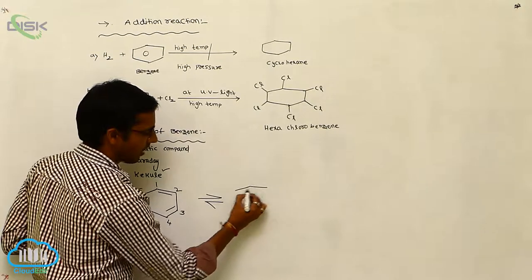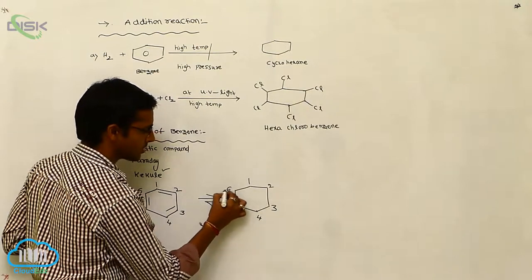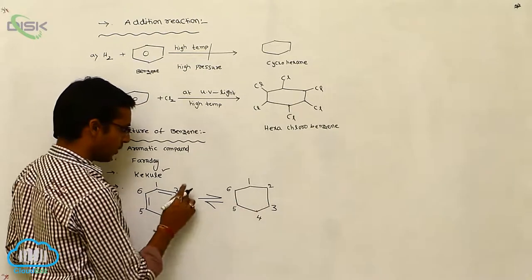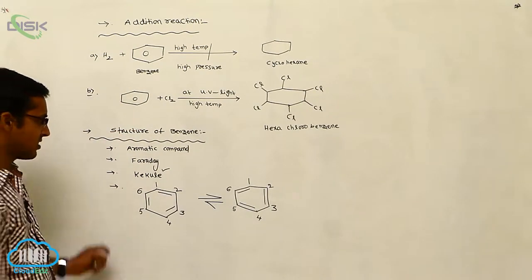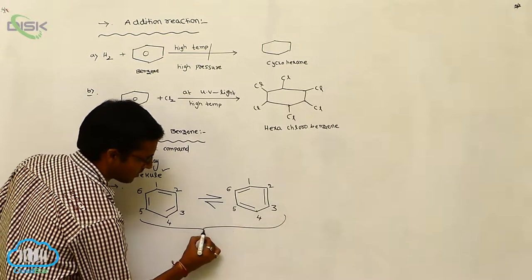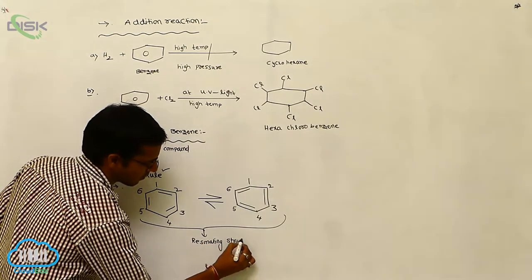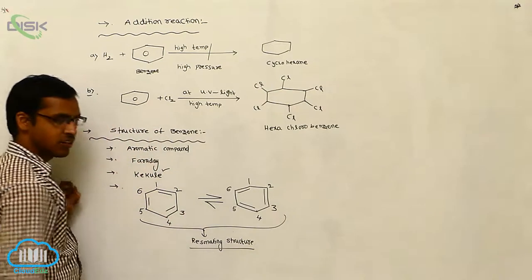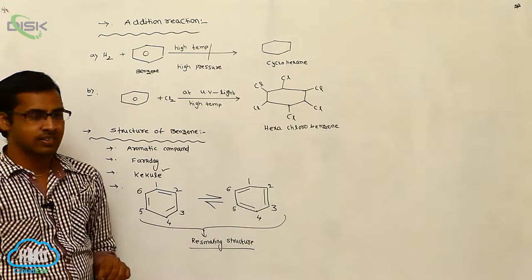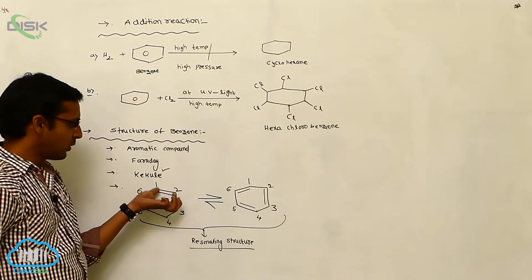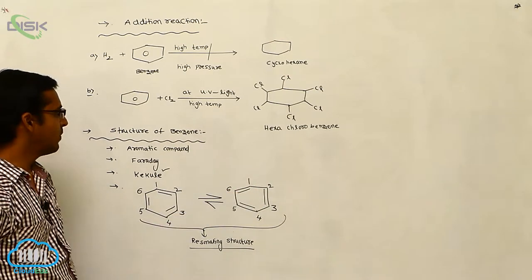This gives resonating structures. In structure one, a pi bond is present at the C1–C2 position; in structure two, there is no pi bond at that position. The difference between the two resonating structures is the position of the pi bonds, showing that benzene is involved in a delocalization process.